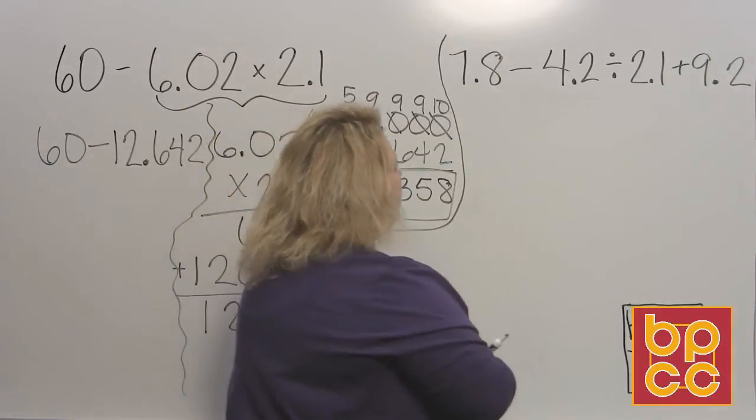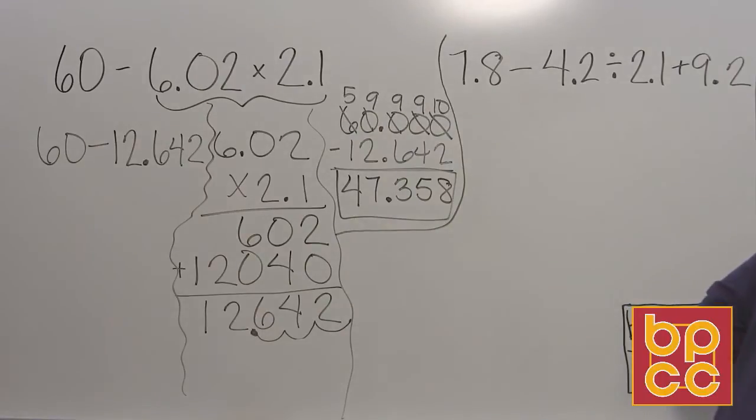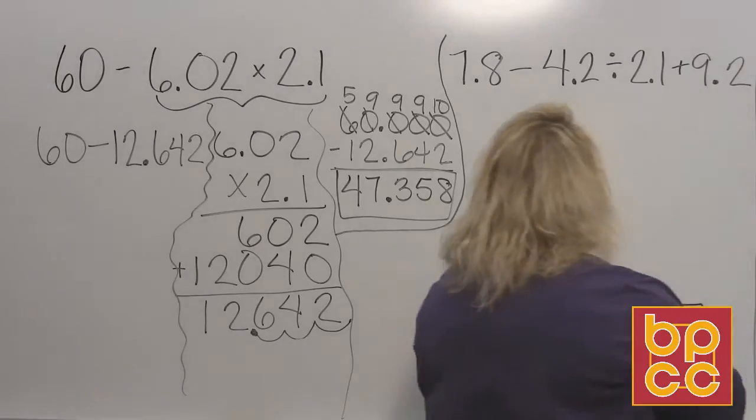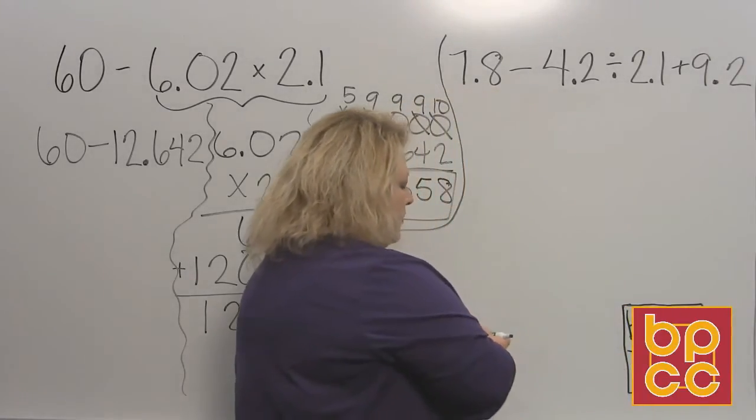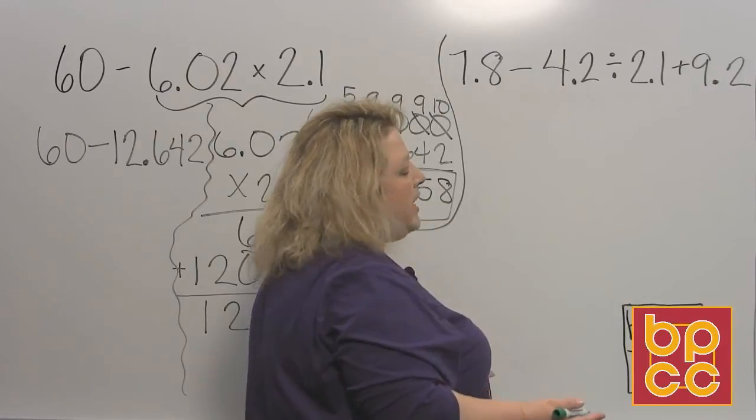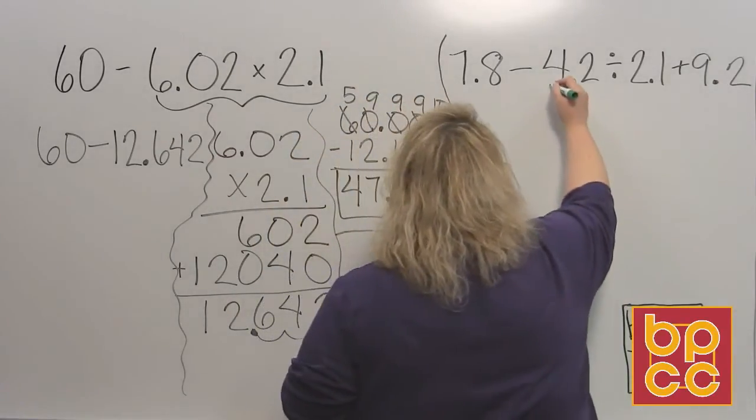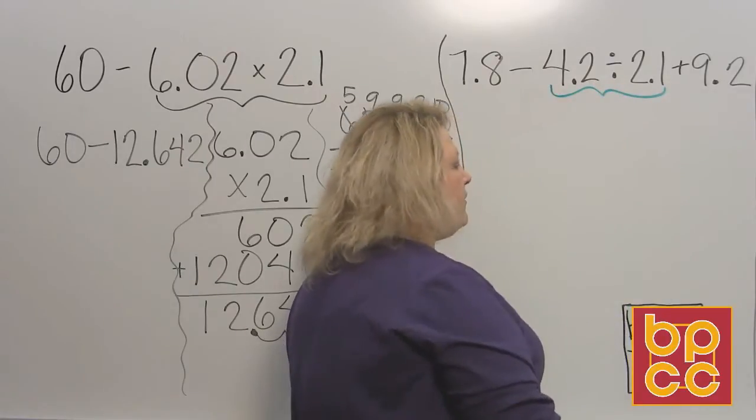And now we're going to go over here and we're going to do our other problem. I'll change colors. Alright, so now I want to look at this one and say, okay, I see a subtraction, a division, and an addition. So order of operation says multiply and divide comes first. So I've got to do that first.